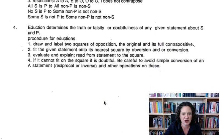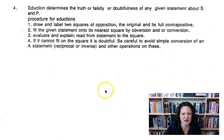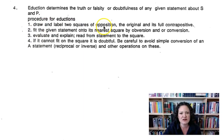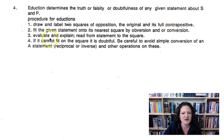Remember we went down to the bottom of this handout to talk about eduction. It says: draw and label two squares of opposition, the original and its full contrapositive; fit the given statement onto the nearest square by obversion or conversion; evaluate and explain; and we're going to figure out if it's true, false, or doubtful.